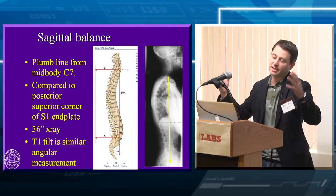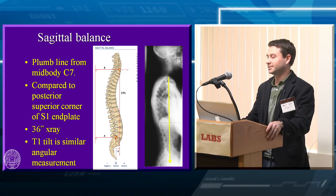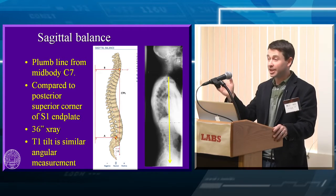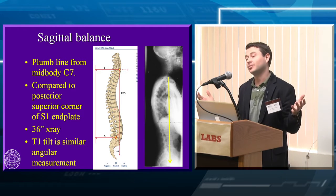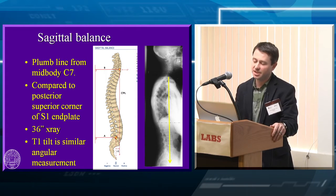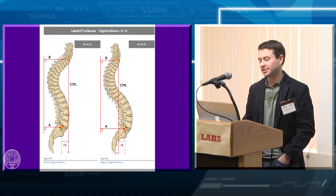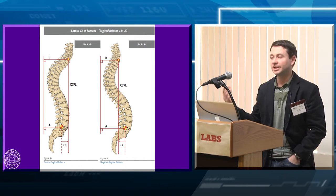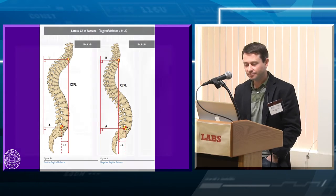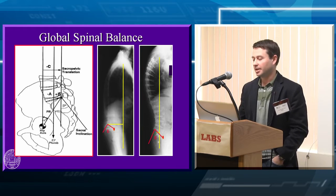C7 plumb line is sort of where it all started. It's measured from mid-body C7 to the posterior superior aspect of the sacrum. A 36-inch x-ray is mandatory to measure that. T1 tilt is an angular measurement that takes positional factors into account and is probably a better measure, though a little harder to use, and it's gaining steam. A C7 plumb line that's in front of your sacrum is a positive sagittal balance; if it's behind, that's negative. Positive is the big problem; negative usually isn't. We'll see where cervical alignment factors into global balance.